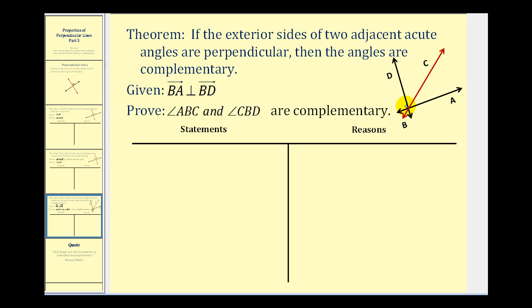Given that ray BA is perpendicular to ray BD, we want to prove that angle ABC, this angle here, and angle CBD, this angle here, are complementary.